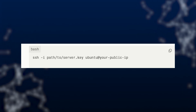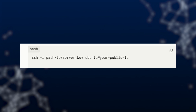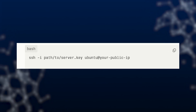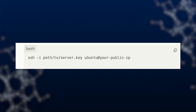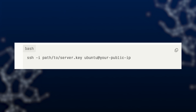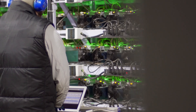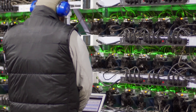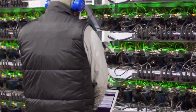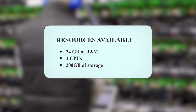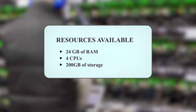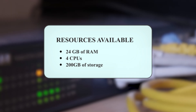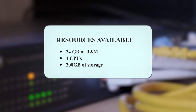So the key features of Oracle Cloud Free Tier — the resources available: you can access a server with 24 gigabytes of RAM, four CPUs, and 200 gigabytes of storage, which is quite generous compared to other free offerings.